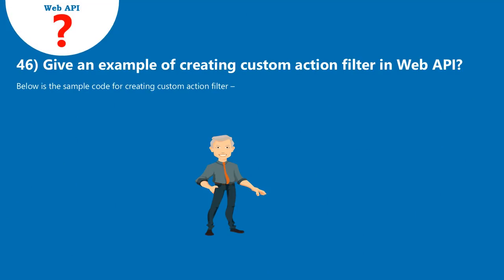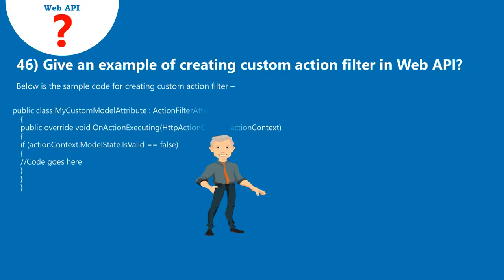Question 46: Give an example of creating a custom action filter in Web API. Below is the sample code for creating a custom action filter.